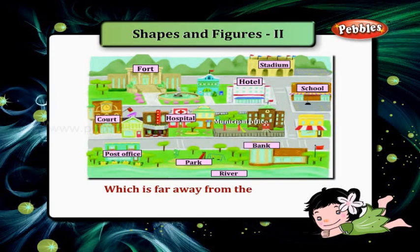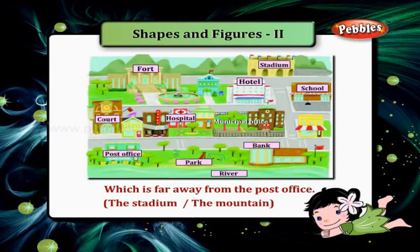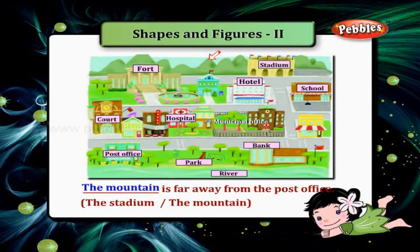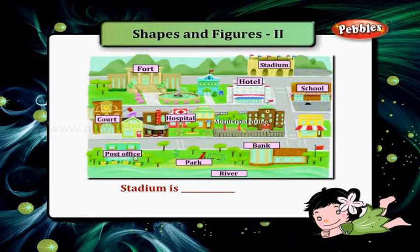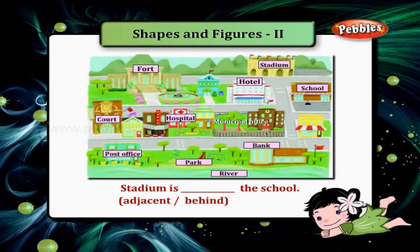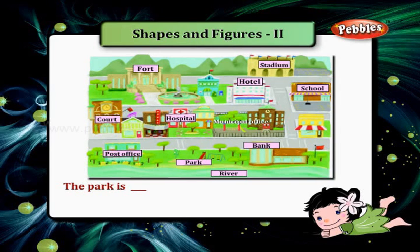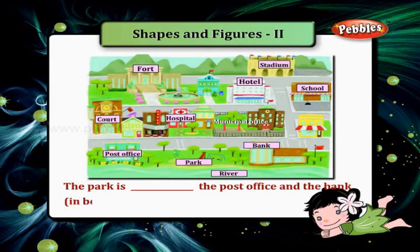Which is far away from the post office — the stadium or the mountain? The mountain is far away from the post office. The stadium is behind the school. The park is in between the post office and the bank.